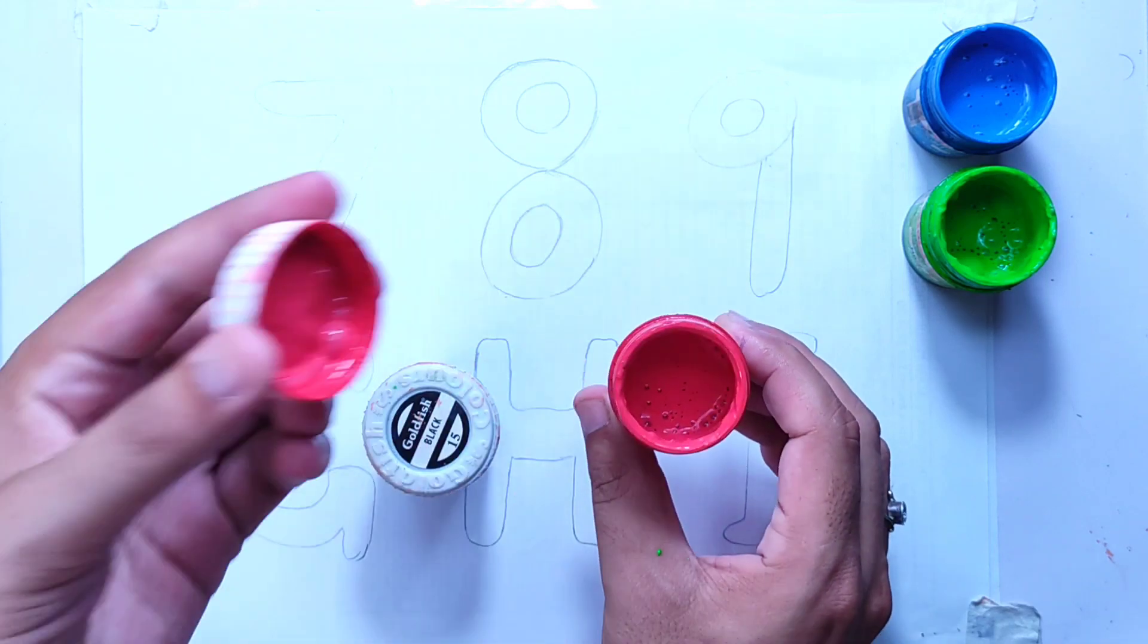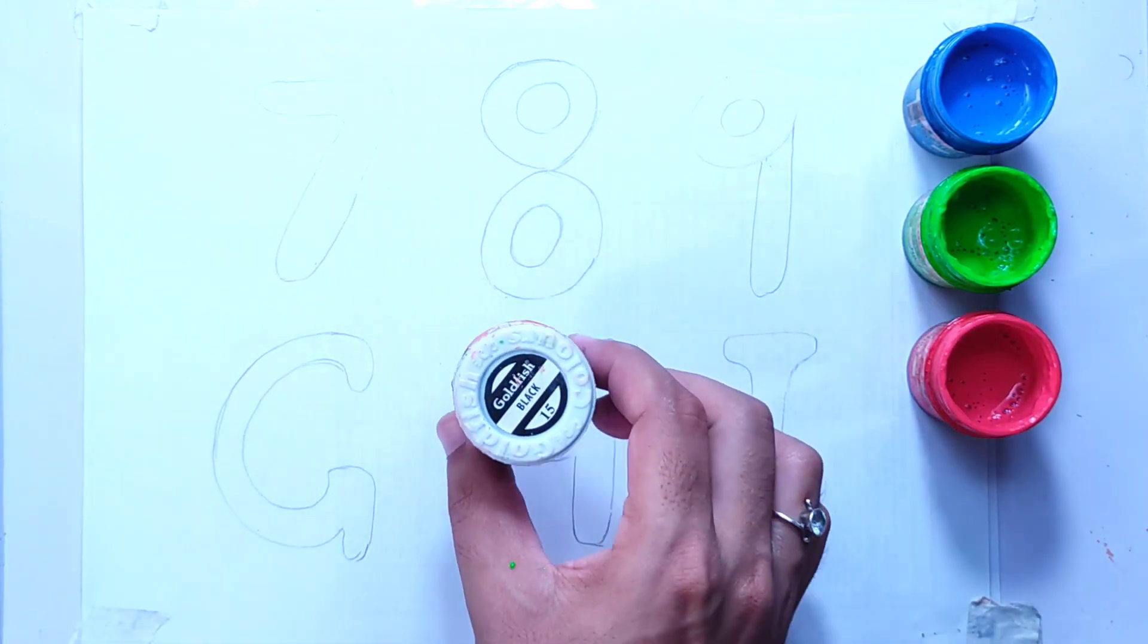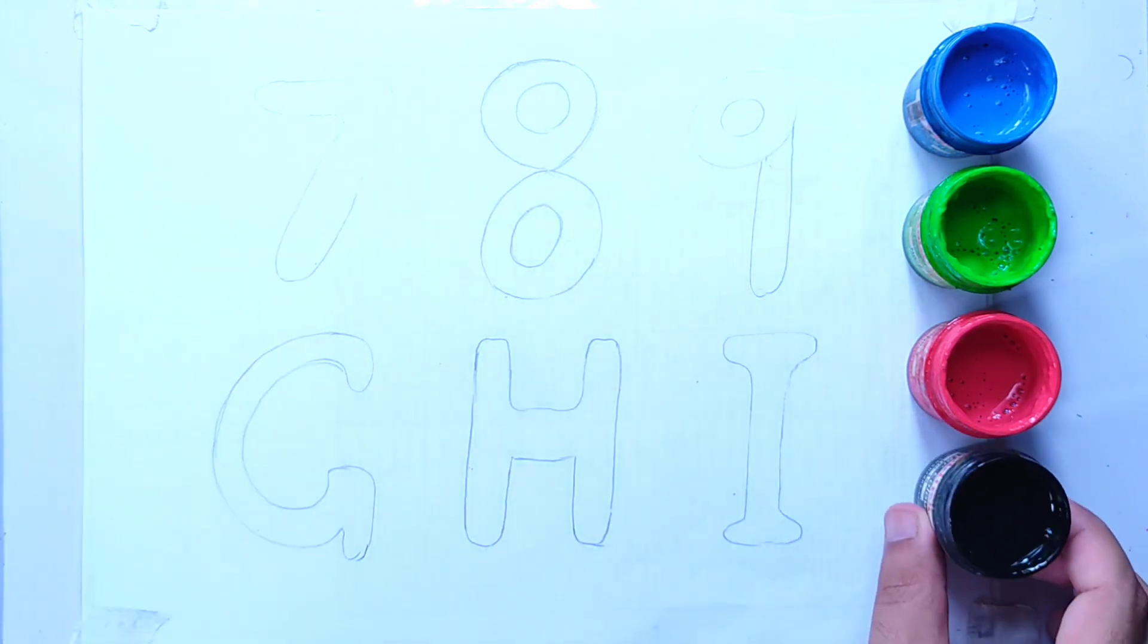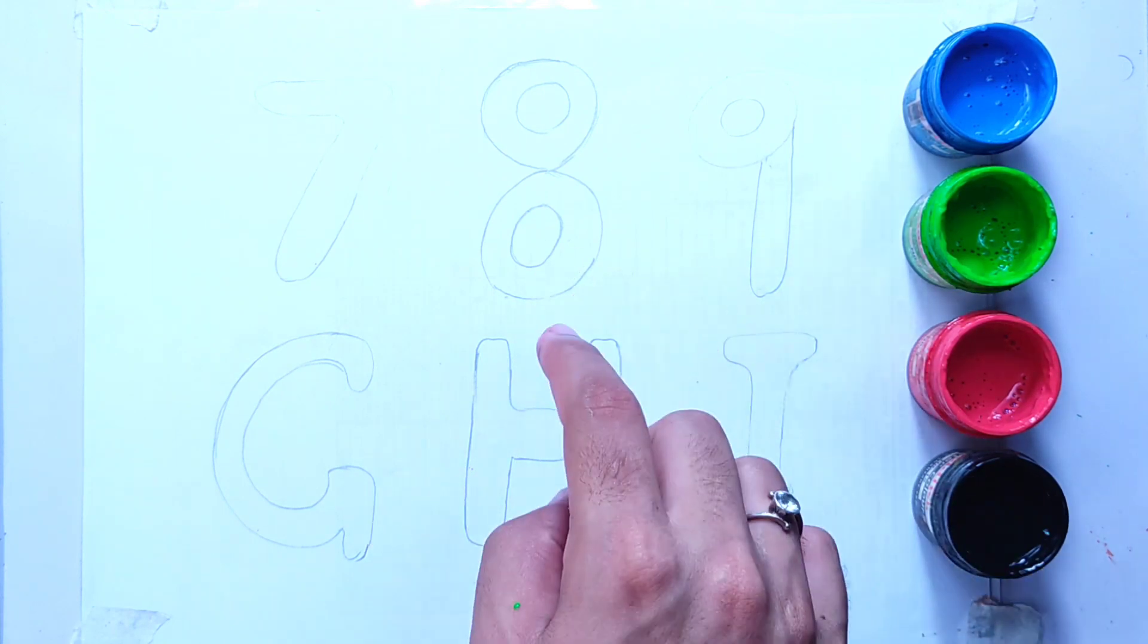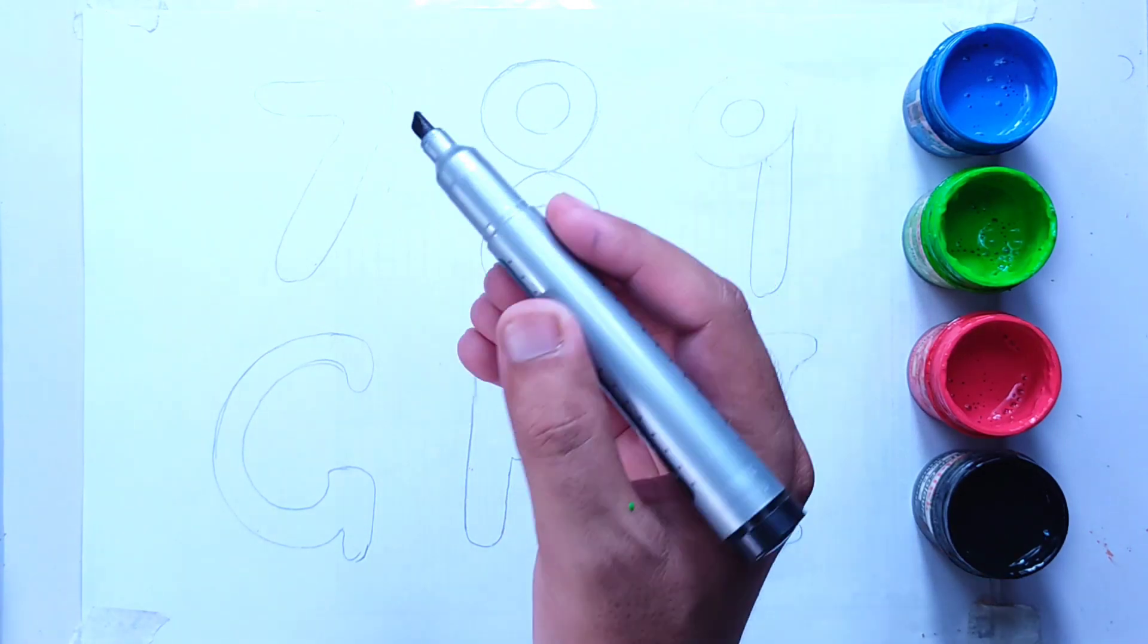We also have red color and black color. Dear kids, don't go anywhere, watch the complete video and do the same practice. Make the outlines using this black color.